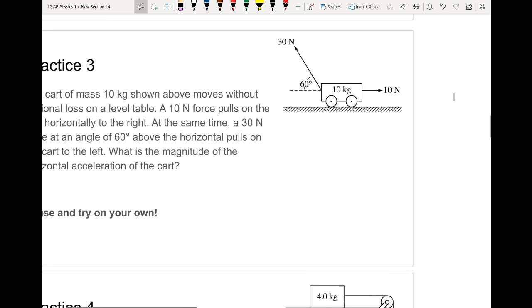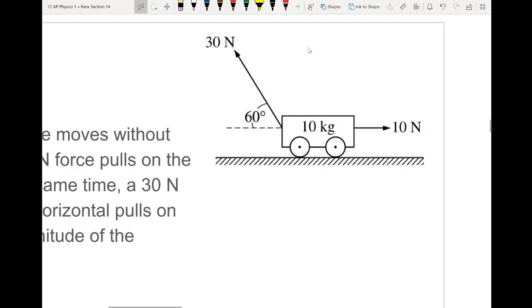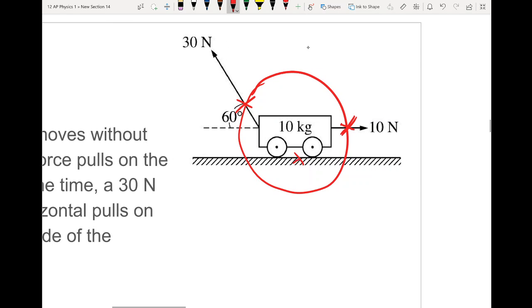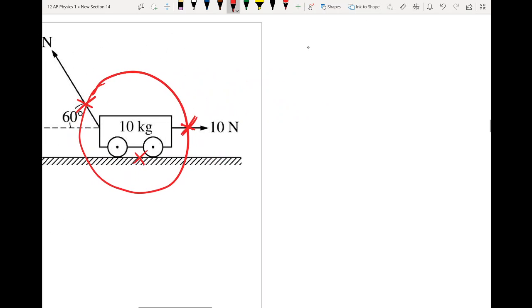Okay, so just like we've been doing, the very first thing that we want to do is we want to circle our object and draw our force diagram. So in this case I'm circling it. I'm thinking about what my contact forces are. It looks like I have a contact from this 10 Newton force that's horizontal, and then this 30 Newton force that is at that 60 degree angle, and I also have contact with the floor. So now we're good to go, we're good to make our force diagram.